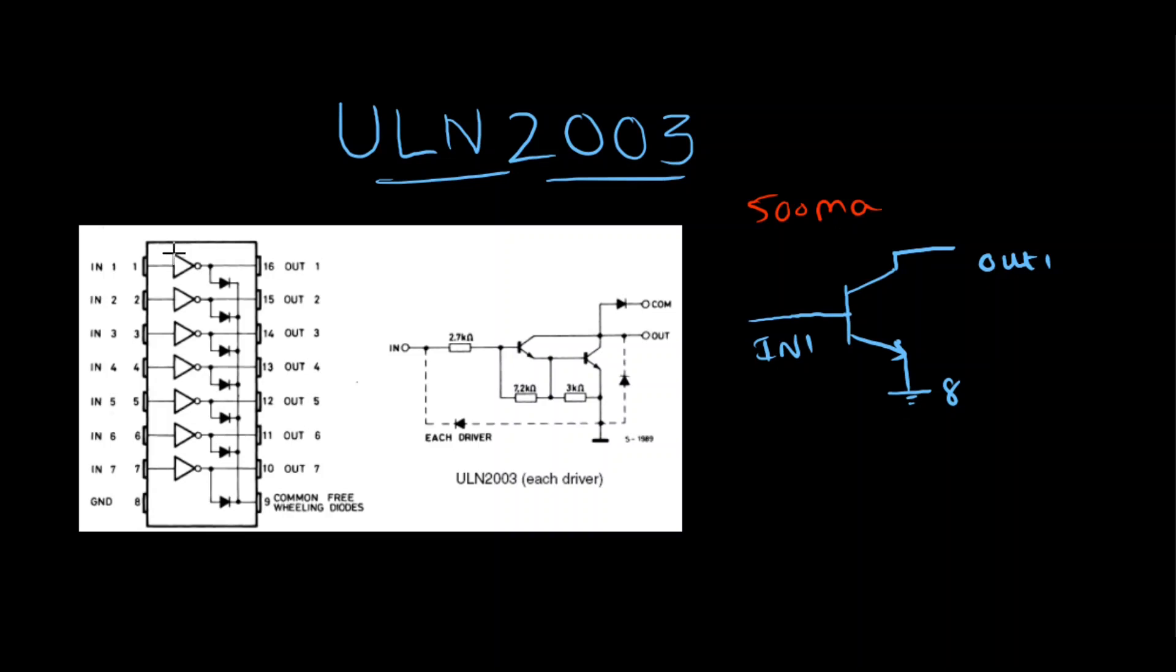Just assume that each driver is nothing but a transistor and the input, whatever you are giving here, is coming to the base of the transistor and the output is the collector of the transistor. With this basic understanding, let's try to connect an LED to ULN2003 and then control it via our PryoGeek Uno app.